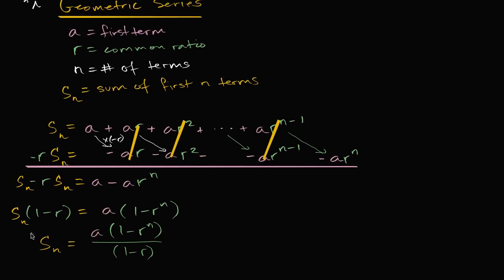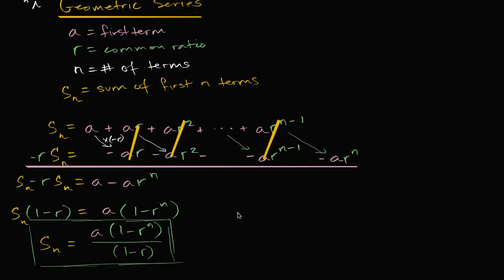And we're done. We have figured out our formula for the sum of a finite geometric series. In future videos we will apply this. An important reminder: whenever you use this formula, keep close track of how many terms you're actually summing up. If you have sigma notation starting its index at zero and going up to a number, you'll have that number plus one terms. N is the number of terms, A is the first term, and R is the common ratio.